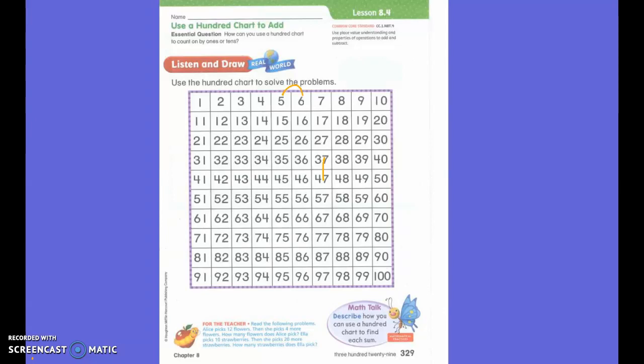That's what we're going to be talking about today is how many I can move over or move down if I have my 1s place and 10s place. Alice picks up 12 flowers. Then she picks up 4 more flowers. How many flowers does Alice pick? Start at 12 and count on 4 spaces. Where do you stop?